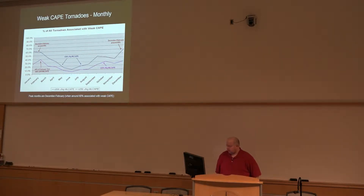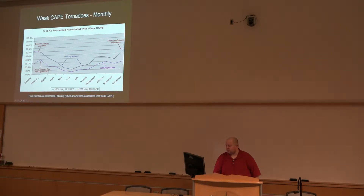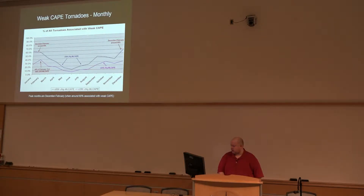Some more monthly information: 40% of all February tornadoes were associated with CAPE of less than 250 joules per kilogram, which is a relatively high amount. For the December through February timeframe for all tornadoes, around 60% were associated with ML CAPE of 500 joules per kilogram or less. Even lowering that threshold to 250, a very high portion of cases occur with just very minimal amounts of instability in February and surrounding months like January and December.